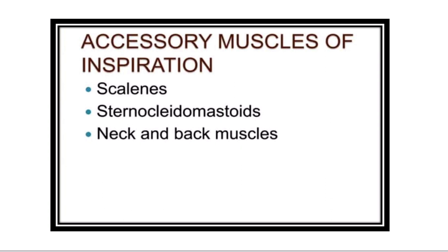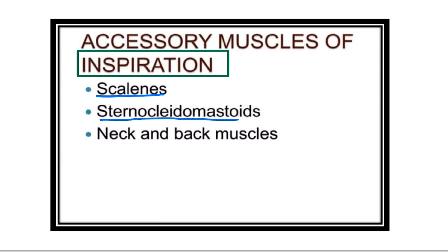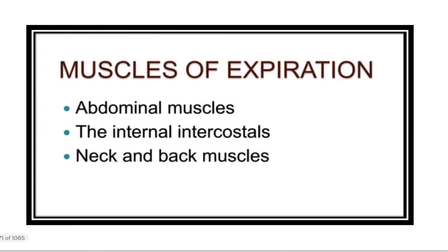The accessory muscles of inspiration become involved when a person is running, walking, or doing heavy work. These include the scalene muscles — anterior, middle, and posterior — which are three important scalene muscles, as well as the sternocleidomastoid muscle and other neck and back muscles. These help during inspiration when more oxygen is required.